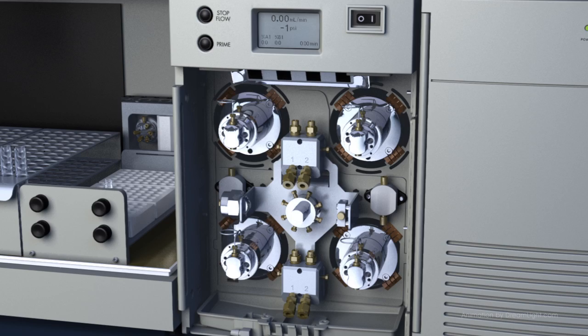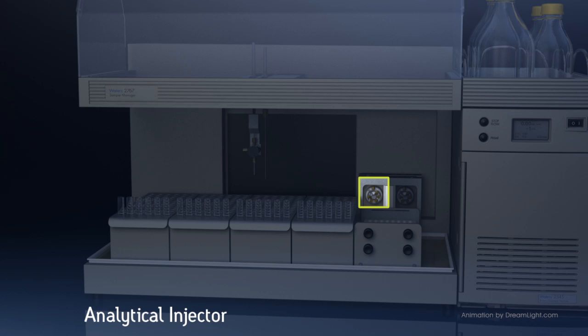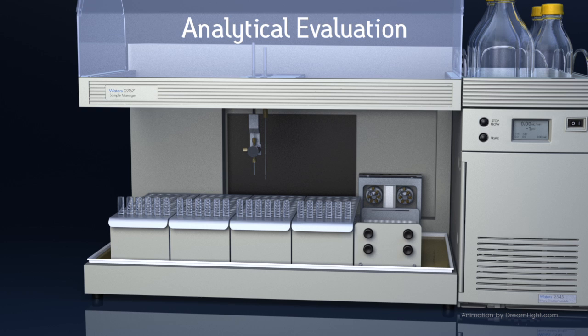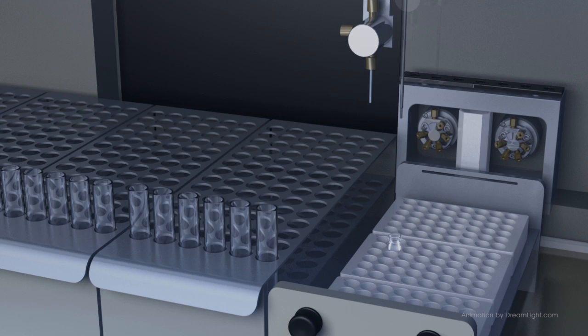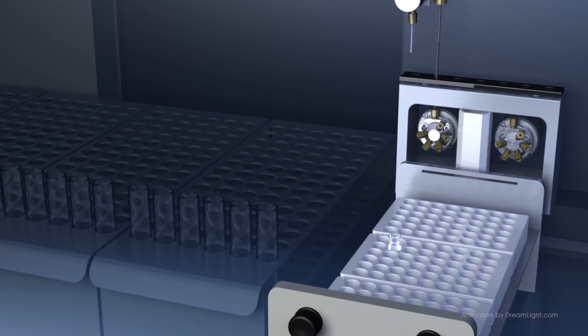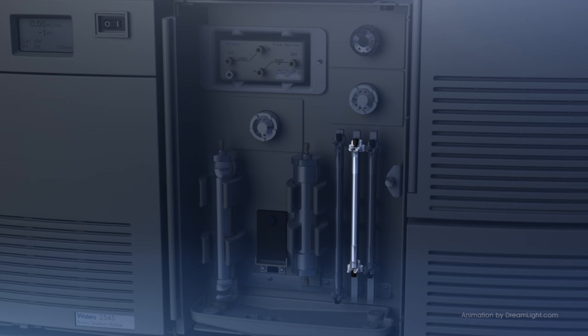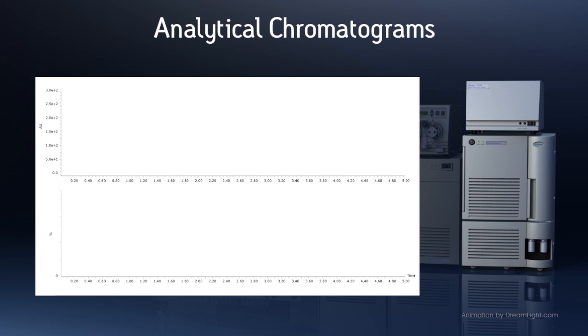Unique solvent delivery technology enables the pump to deliver analytical flow rates to the analytical injector. An analytical evaluation of a crude sample is performed to determine if purification is necessary. A small amount of the sample is injected through the analytical valve of the autosampler. The sample is separated on the analytical column and sent to the detectors.